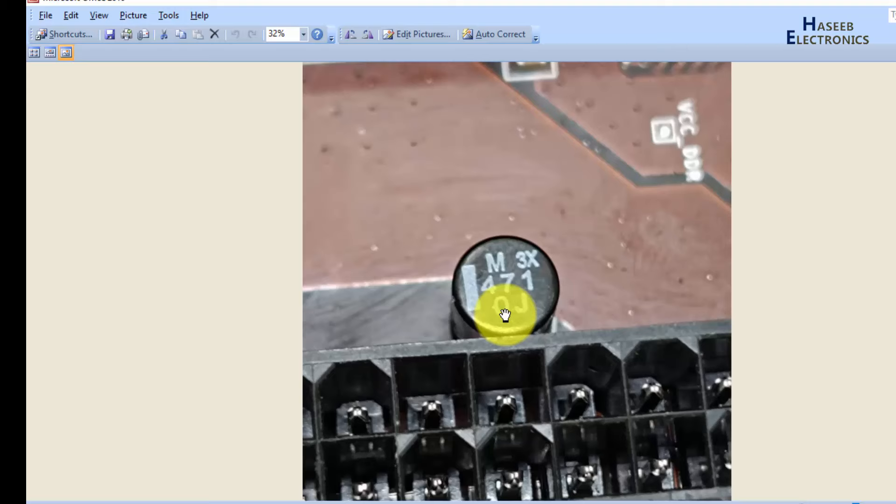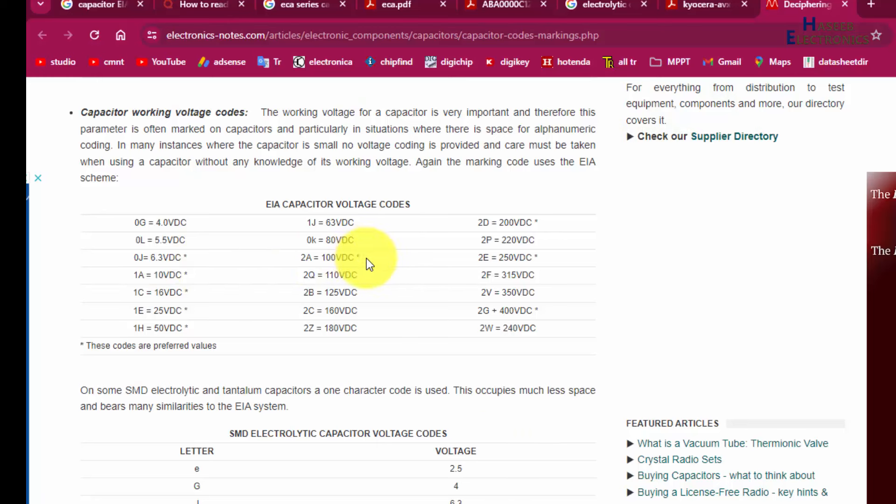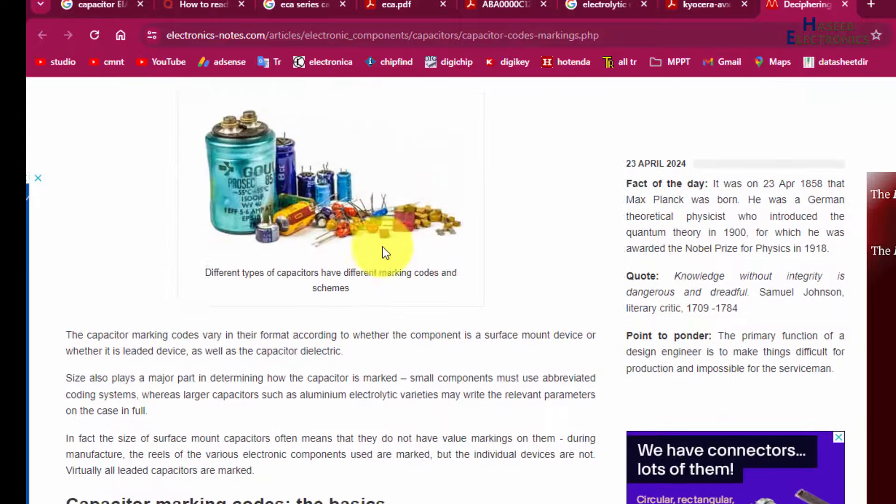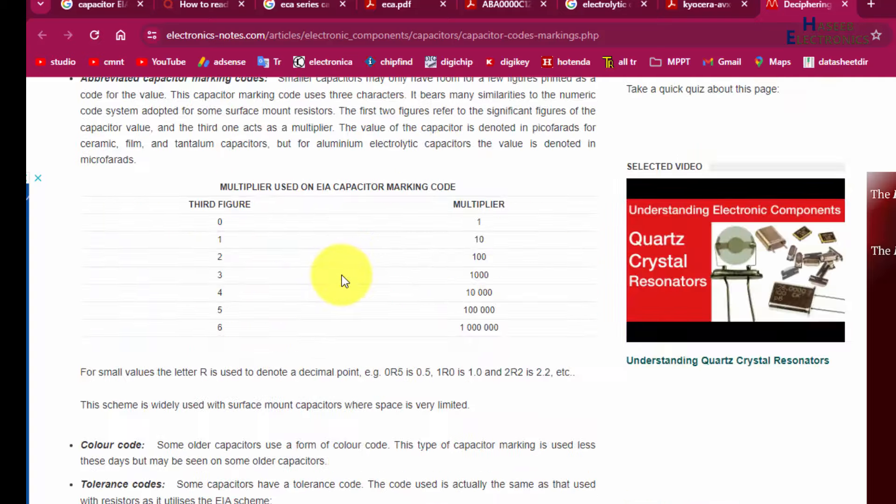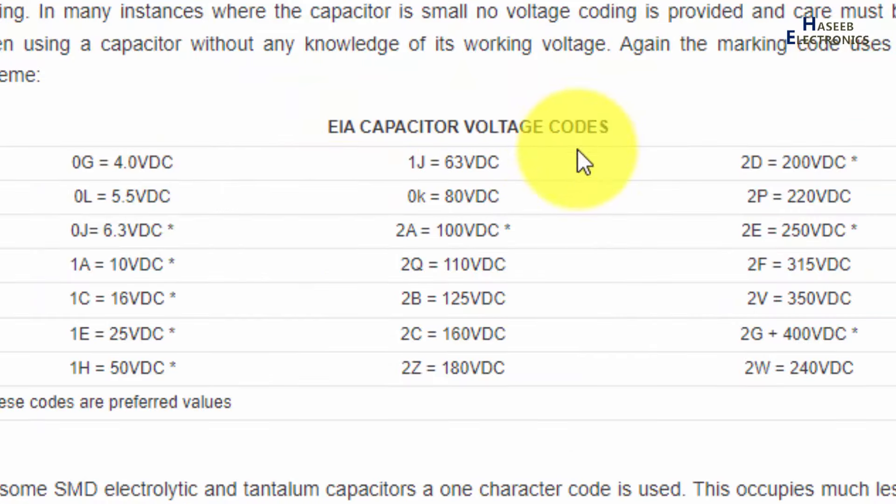Then 0J, this is voltage code—EIA voltage code. A very useful website, this article is Deciphering Capacitor Marking and Code. It's a very useful article. I loved it. Here is the capacitor voltage code.